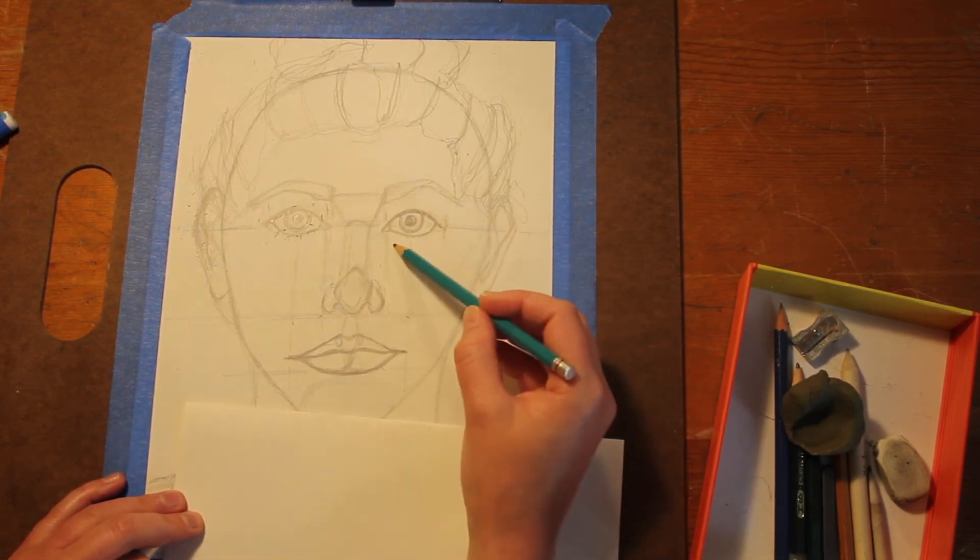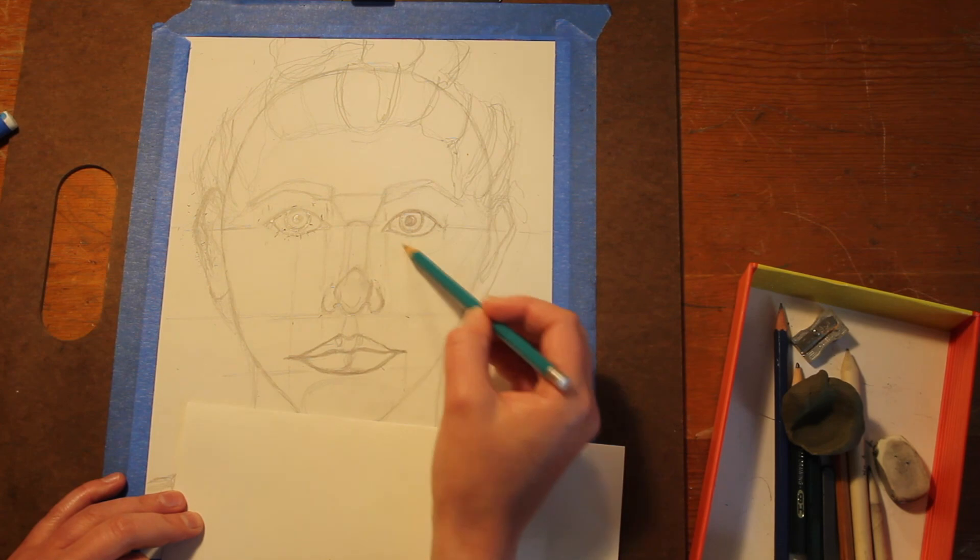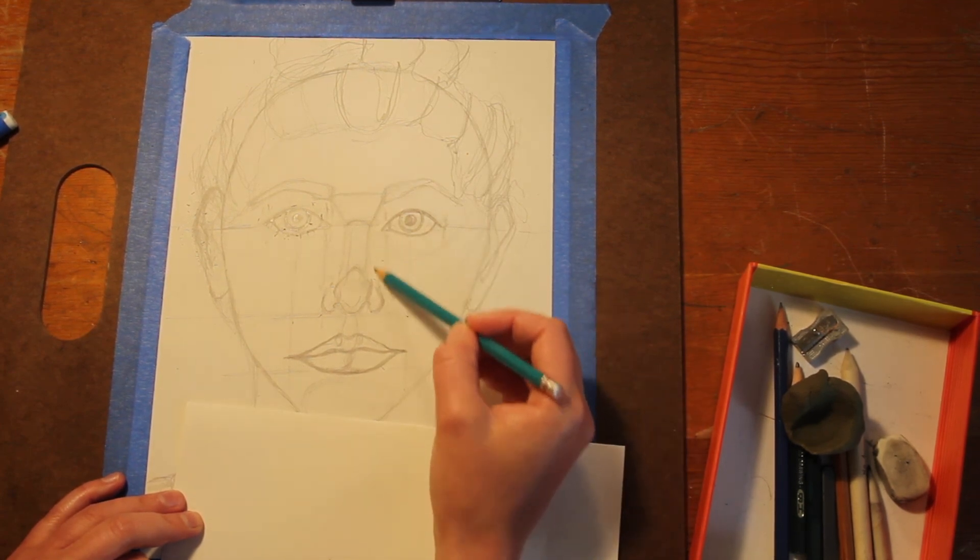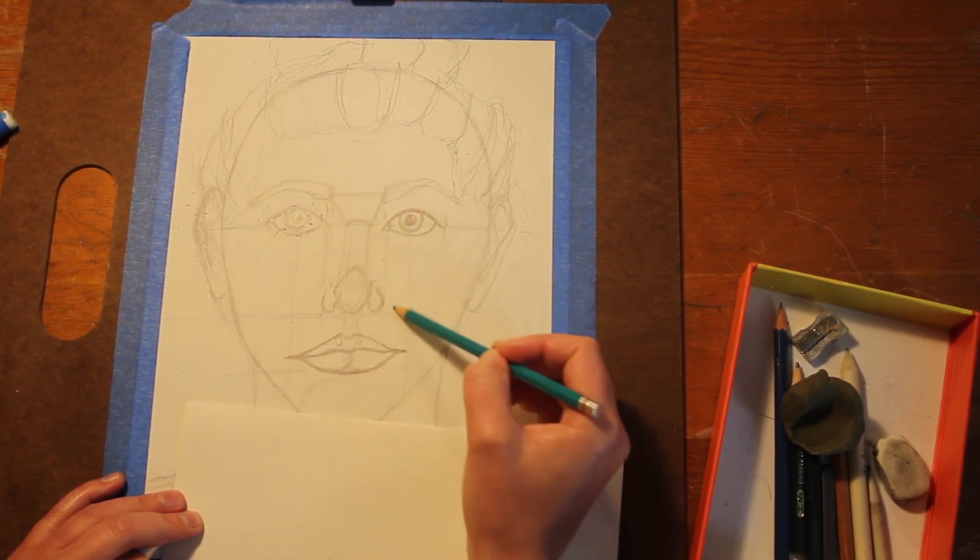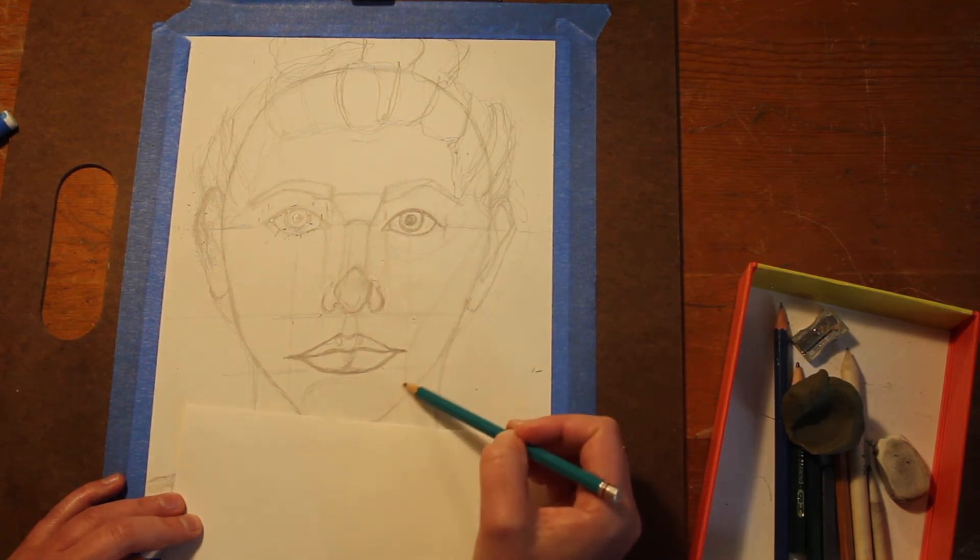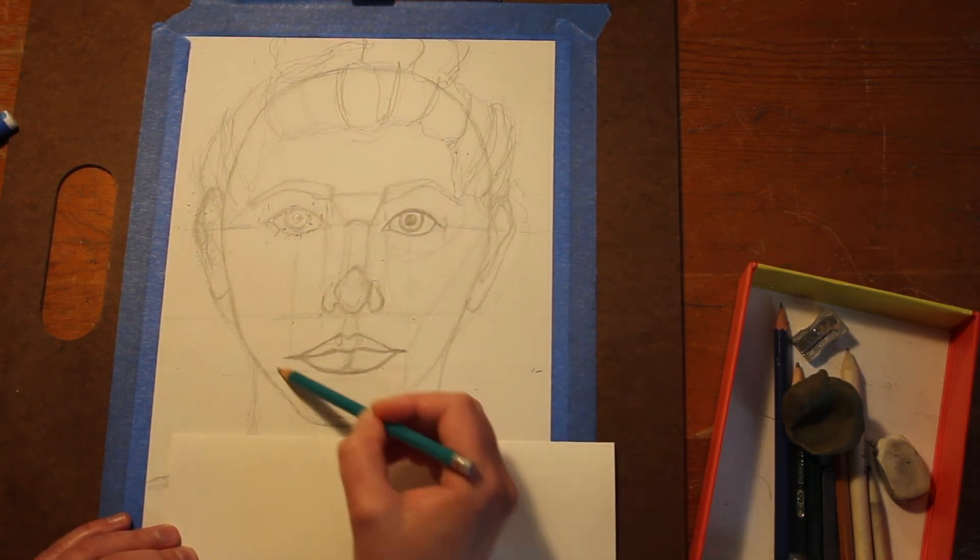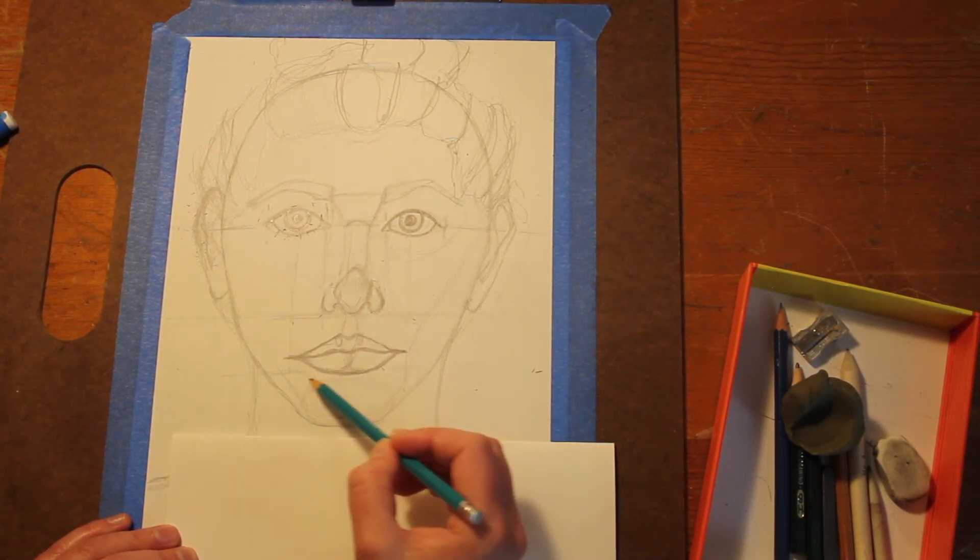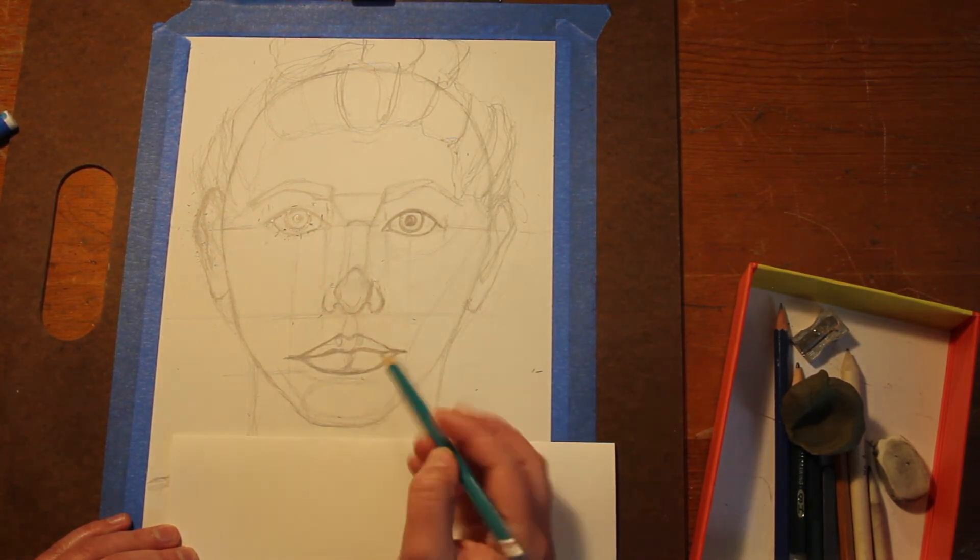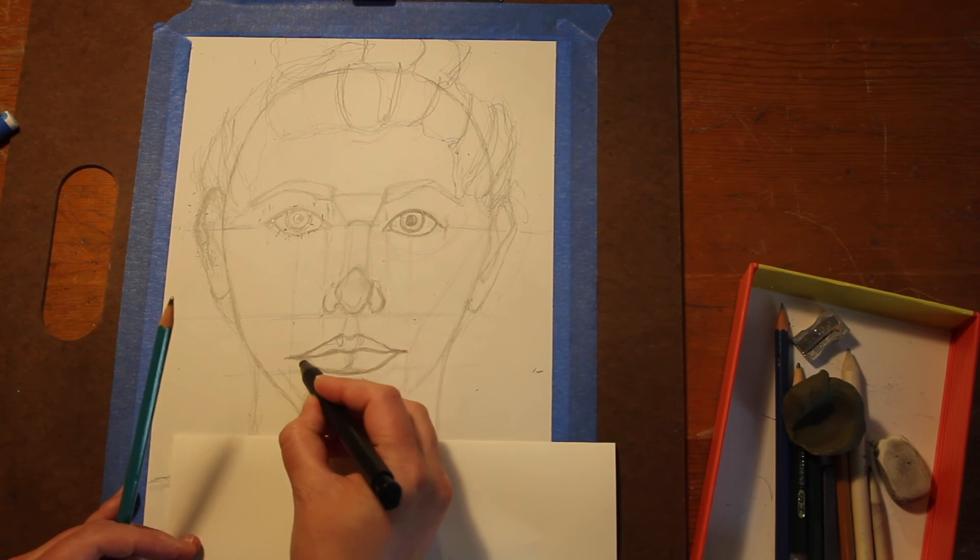I do here start to kind of sketch in just the form of my cheekbone and kind of places where shadows and highlights are going to fall. That's kind of the next direction that we're going in, is going to be starting to think about placement of value and how the form of our face reflects highlights and shadows.